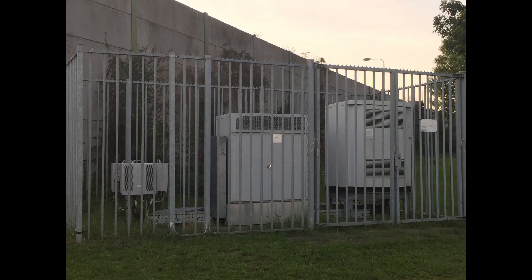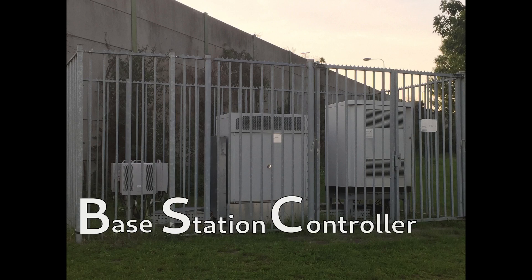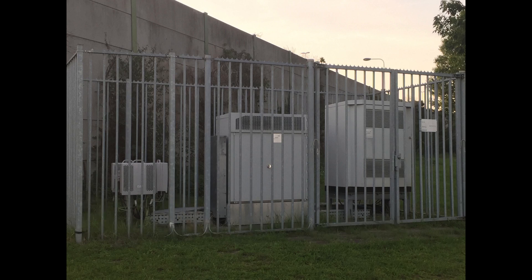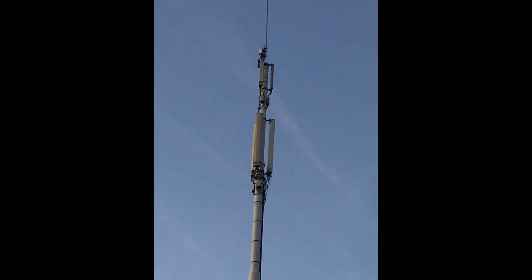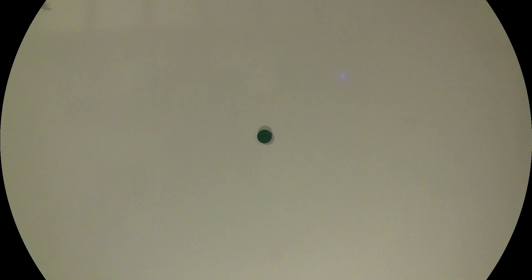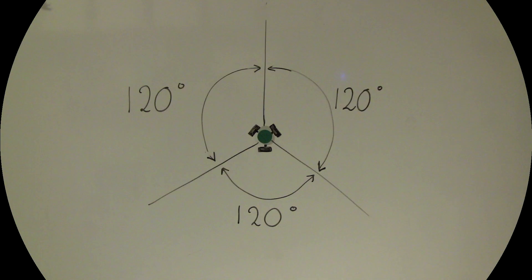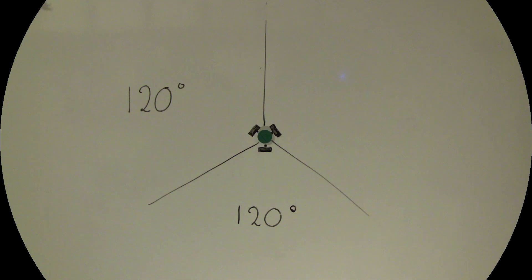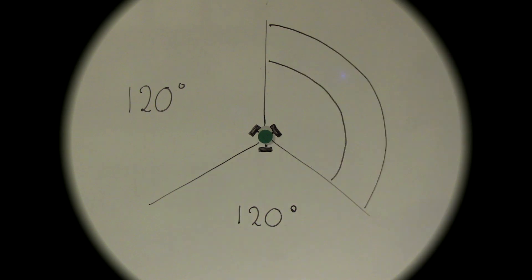Next to the cell tower you will find the BSE. The abbreviation BSE stands for Base Station Controller. The base station controller is responsible for the communication between your smartphone and the cell tower. This represents a base station controller and these are the antennas. The angle between the antennas is 120 degrees. One antenna covers a third of an area, and all antennas together cover the whole area in their range.